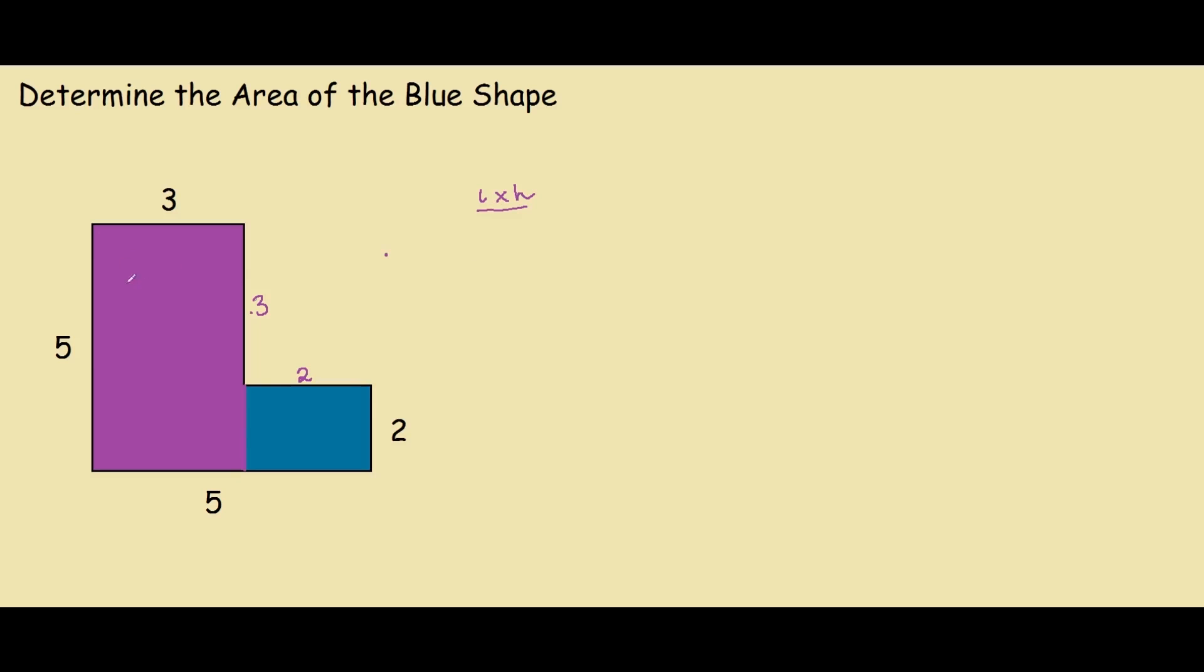To work out the area of this purple rectangle, it will be length times height. The length in this case is 3 and the height is 5. So this is 15.